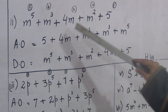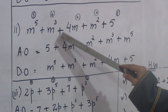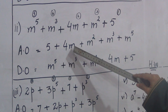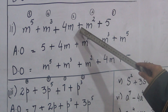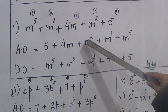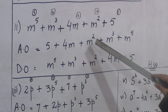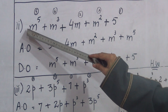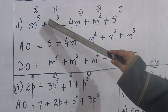The first term is just five. The second term is plus 4m. The third term is plus m squared. The fourth term is plus m cubed. Then plus m raised to the power five.